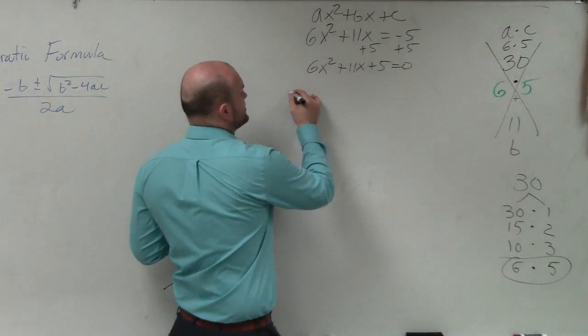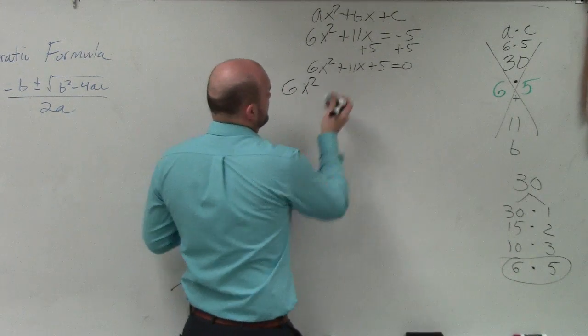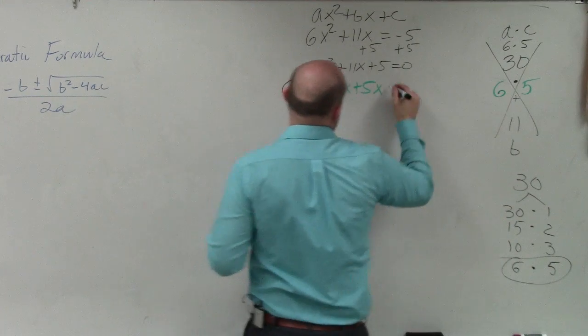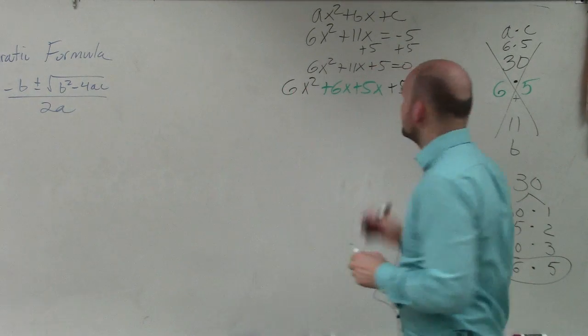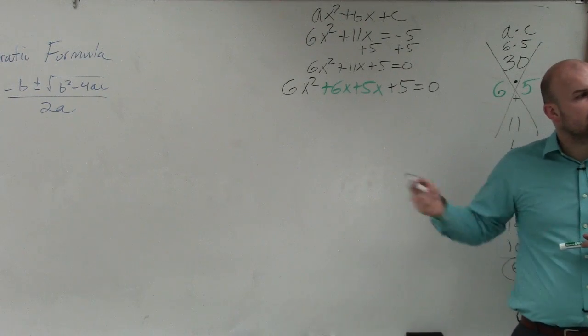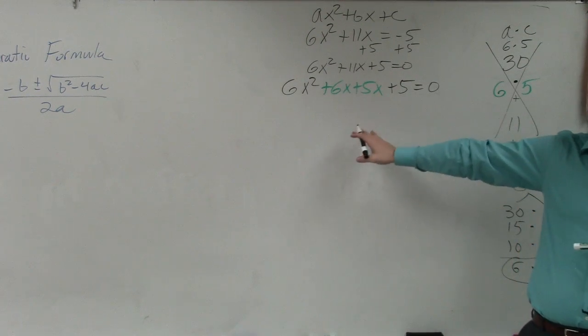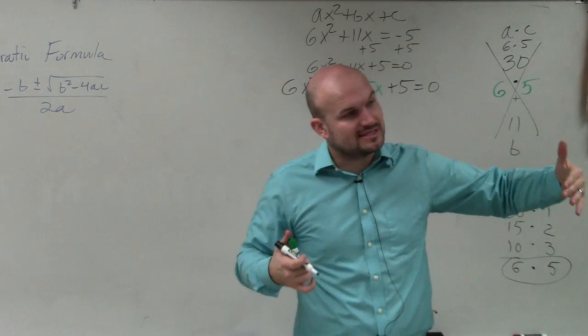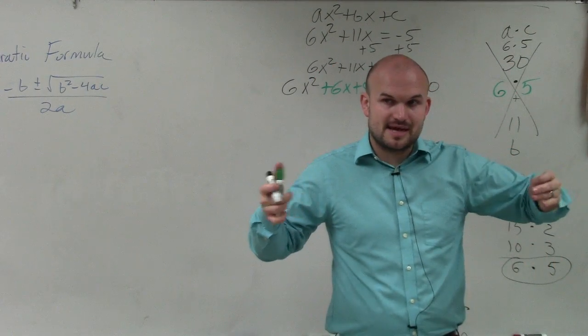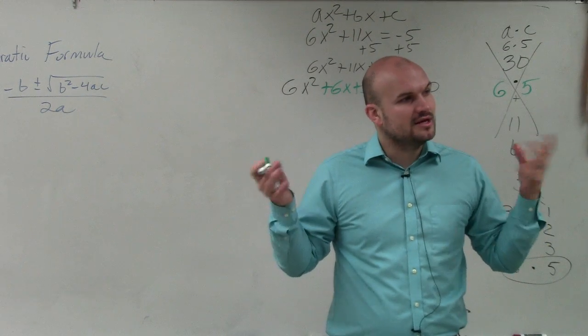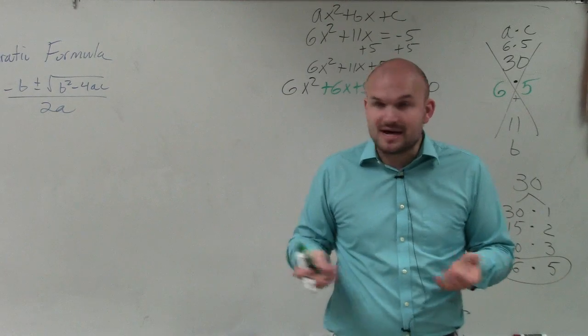So now, basically what I'm going to do is write 6x squared plus 6x plus 5x plus 5 equals 0. Does everybody see that? So now, what I want you guys to understand is, what we're going to do is, just like we did last class period, or just like I did last example, when we have two polynomials, we multiply them, we find the area of the box.